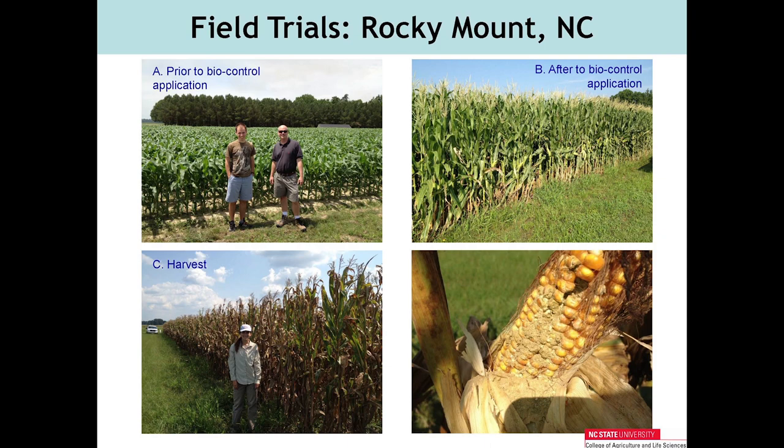Prior to application of the biocontrol, we actually collected soil samples diagonally across the field. We have 20 sites with GIS coordinates in the field, collected samples from each site separately, and put markers at each point so we can go back and collect soil samples after the biocontrol has been applied. We wanted to look at how temporal changes occur in terms of the species composition and correlate that to what we see in terms of toxin contamination. At harvest, we sampled the soil again.